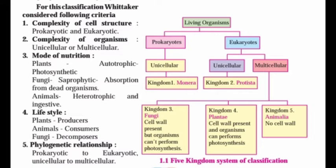Further criteria include ecological role: plants are producers, animals are consumers, and fungi are decomposers. The phylogenetic relationship goes from prokaryotic to eukaryotic and from unicellular to multicellular. In the classification chart, living organisms are divided into prokaryotic and eukaryotic. Prokaryotic organisms are unicellular, forming Kingdom Monera. Eukaryotic organisms include both unicellular — Kingdom Protista — and multicellular organisms.